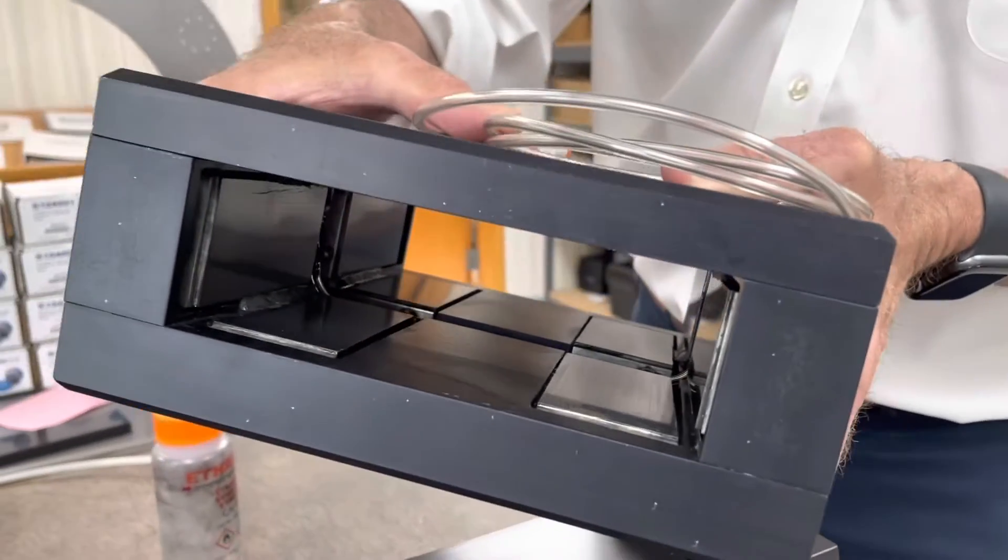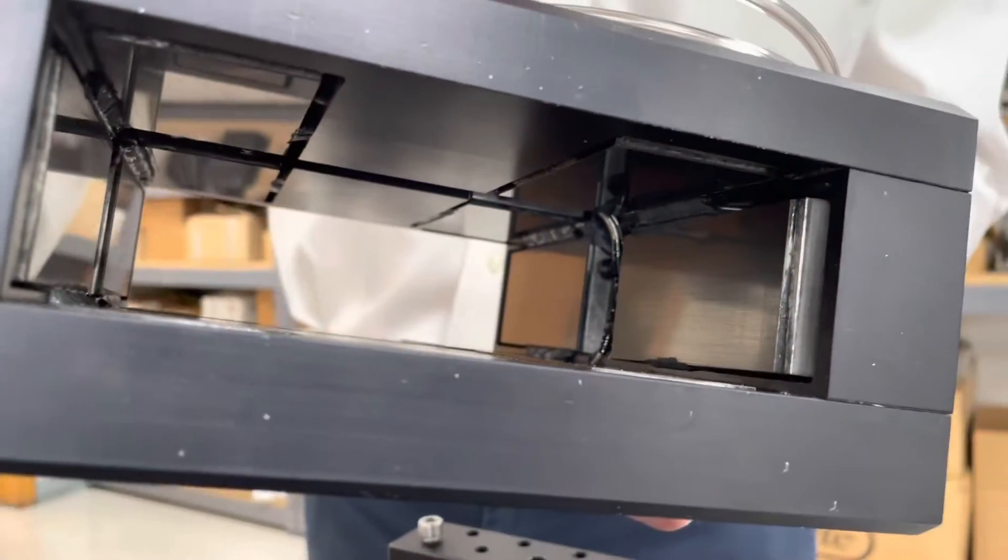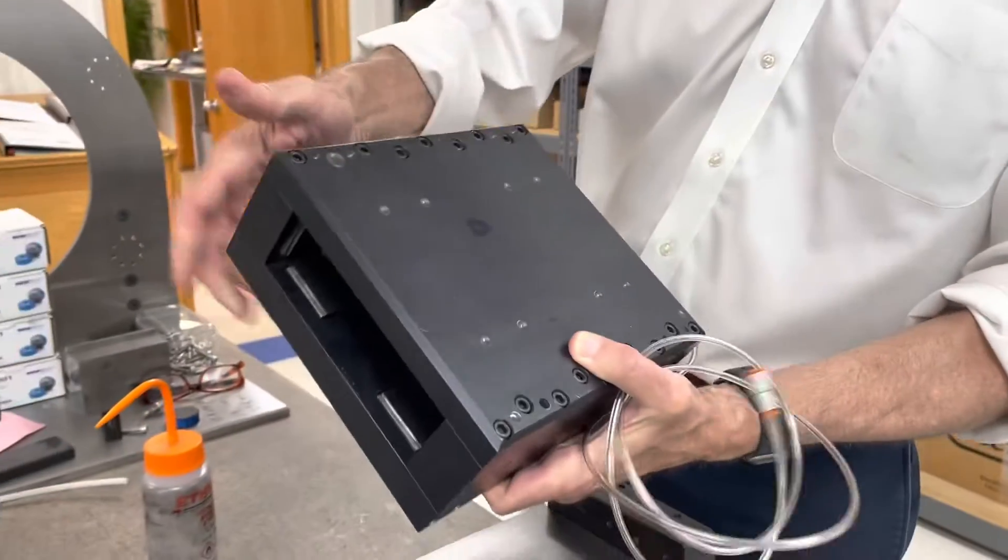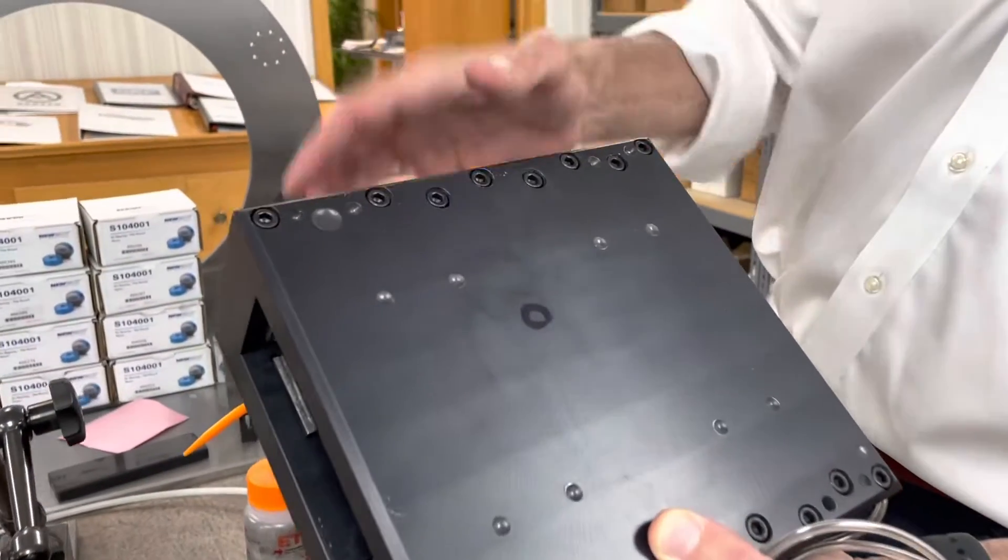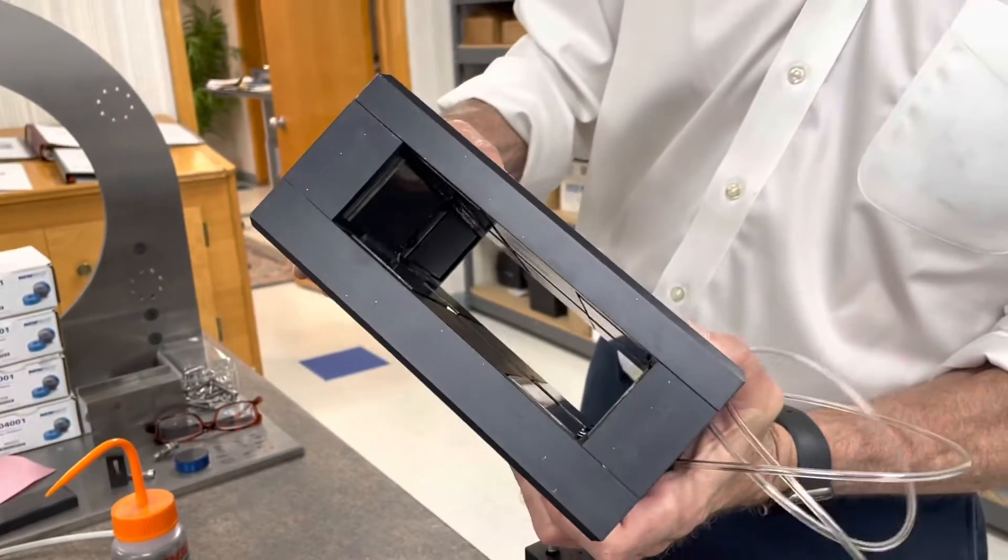So this is a stage that fits on the same guideway that was built with the bonded bearing technique. You can see the bearings bonded in there and here you can see the actual injection points where the epoxy was injected in to set the bearings inside of the housing.